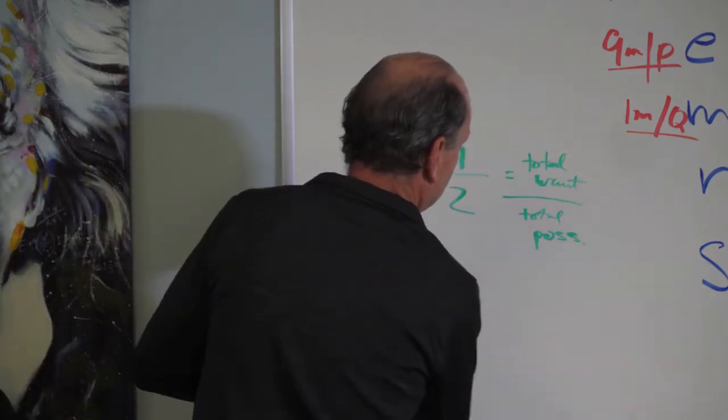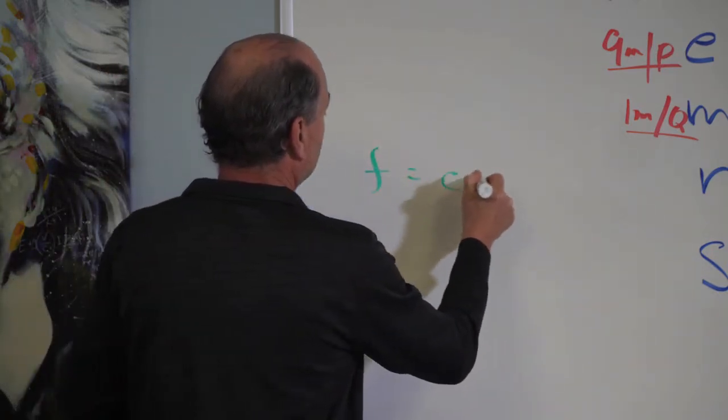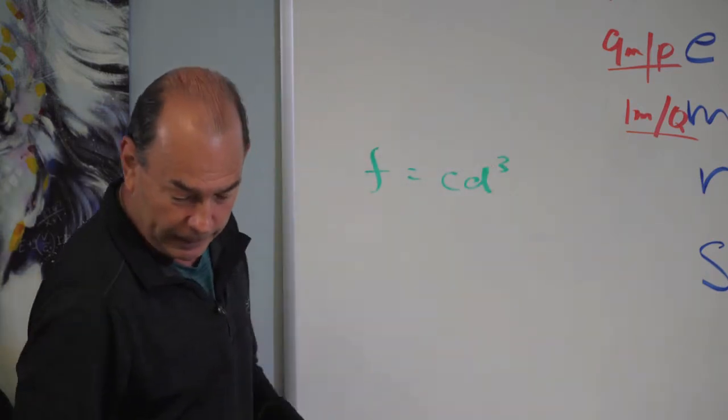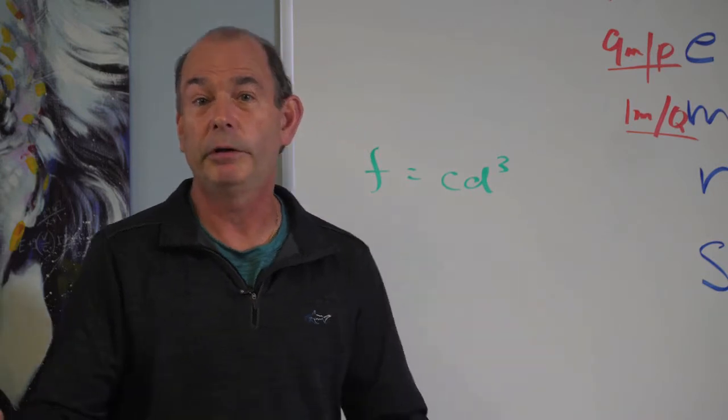Ooh, let's do that. Okay. F equals CD cubed. And if F equals 450 and D equals 10, what is C? What do you do?